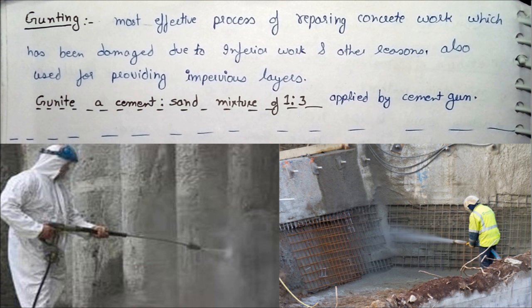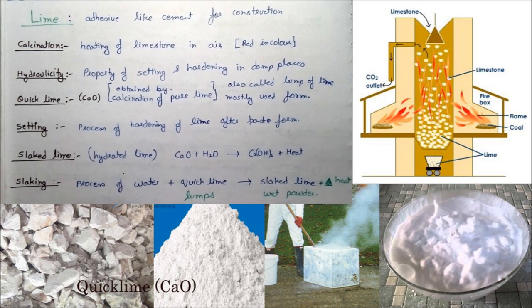A new technique added in mortar application is guniting. In guniting, we take a 1:3 cement-to-sand mixture and fire it through a cement gun via jet-fire at about 2 to 3 kg per cm². That is all about mortar.